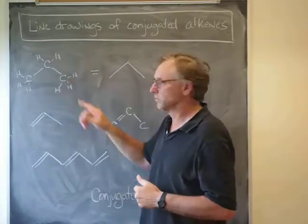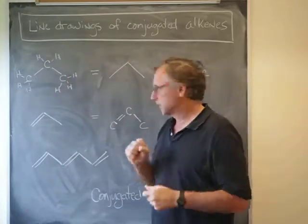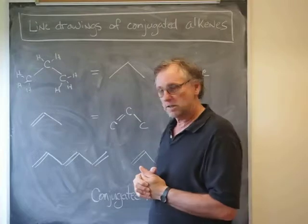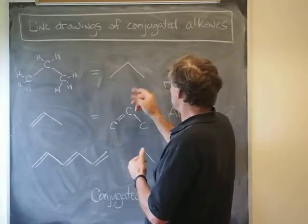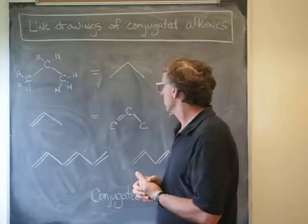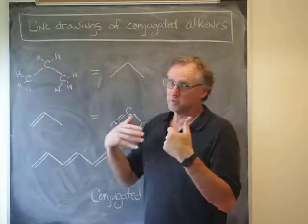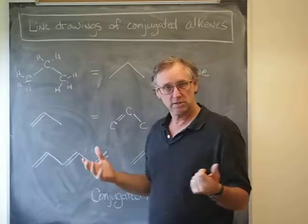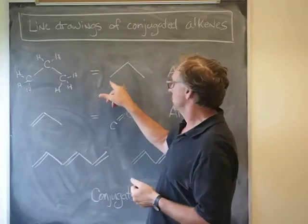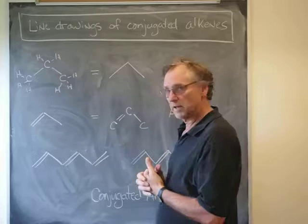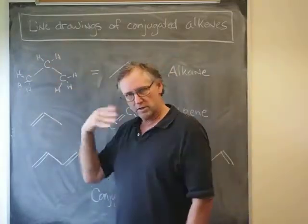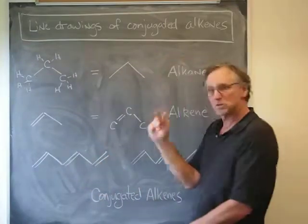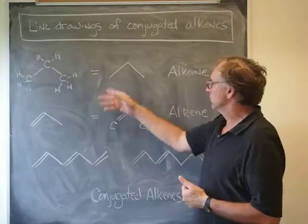You can see that the geometry is similar to the way the carbons are laid out. The rule is that at the end of a line, that indicates a carbon. Anywhere there's a kink in a line, that's another carbon. So I can look at this and see that there are three carbons. We don't draw any hydrogens attached to a carbon in a line drawing, because it's understood that there are three hydrogens attached to that carbon, two there, and three there. The generic term for a molecule with just carbon and hydrogen and all single bonds is called an alkane.